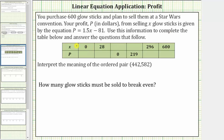Looking at the table, notice how the first row gives the X value, or the number of glow sticks sold, and the second row gives the P value, which is the profit in dollars. This means each column in the table represents an ordered pair that will satisfy the given equation.